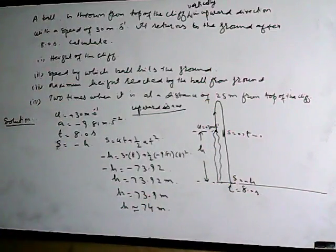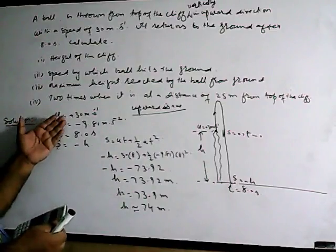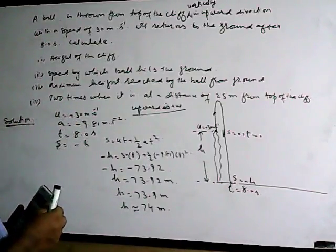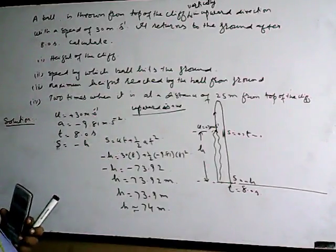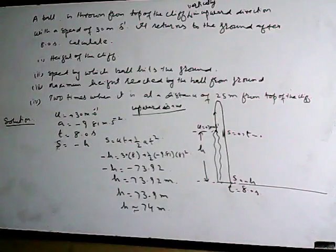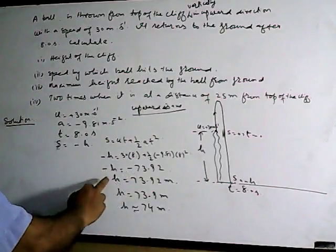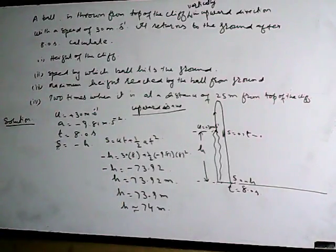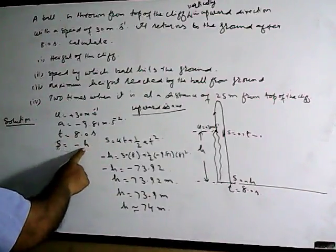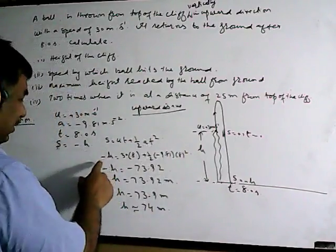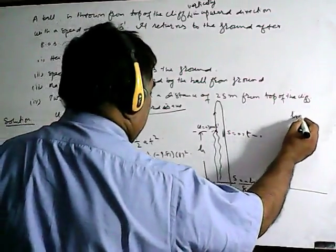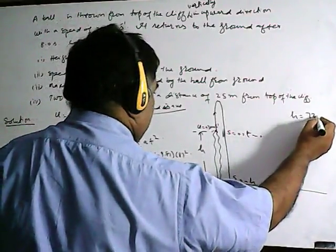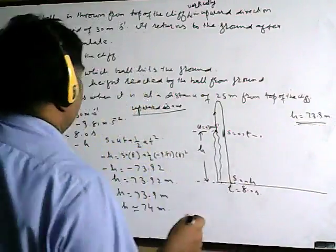So simply: u = +30 m/s, a = −9.81 m/s², t = 8 s, s = −h. Putting into s = ut + ½at²: −h = 30×8 + ½×(−9.81)×64. The minuses cancel out and h = 73.9 meters — roughly 74 meters. That is the height of the cliff.